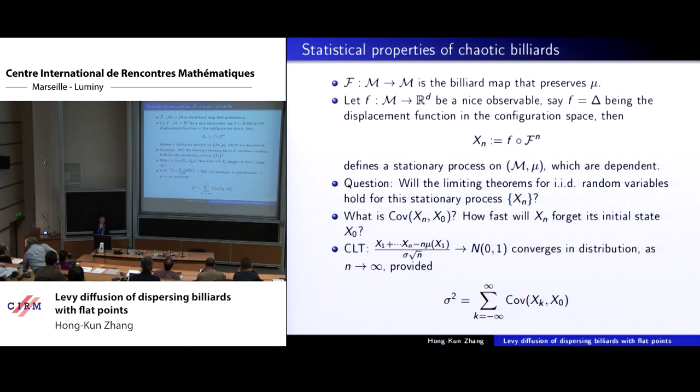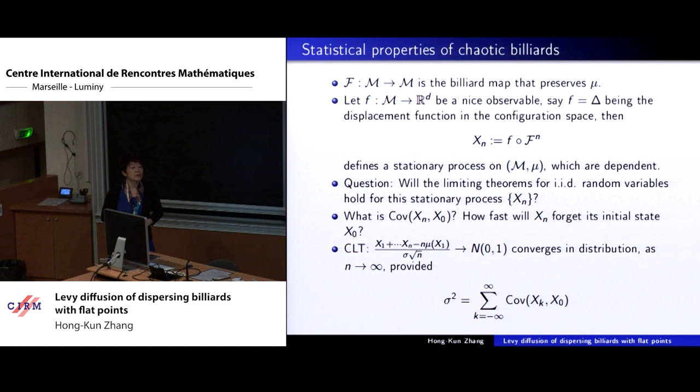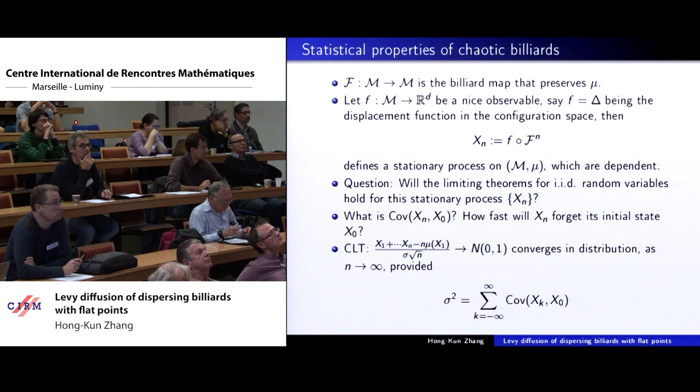Because there are many experts in this audience from probability theory, you may not be familiar with billiards. In that case, just imagine billiards is a special type of dynamical system. Here I'm concentrating only on two-dimensional billiards. The domain is a two-dimensional domain, and we have a billiard map which preserves a measure. The billiards we consider have strong chaotic properties — for example, they are mixing dynamical systems.